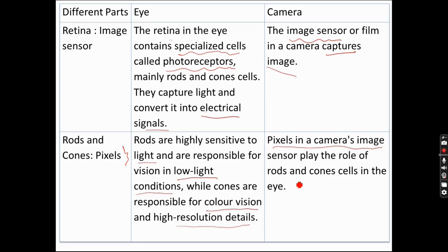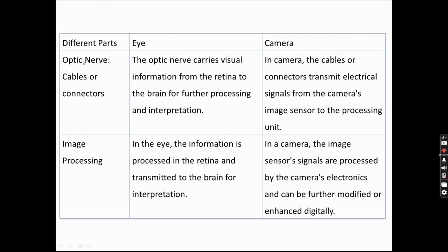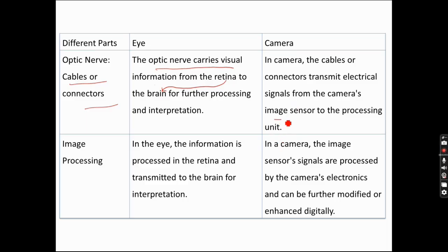The optic nerve in the eye corresponds to the cables or connectors used in cameras. The optic nerve carries visual information from the retina to the brain for further processing and interpretation — the retina captures the image while the brain predicts and interprets it. In the camera, cables or connectors transmit electrical signals from the image sensor to processing units such as a CPU or laptop.